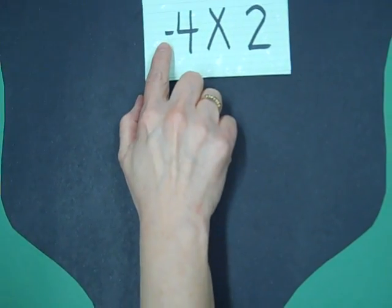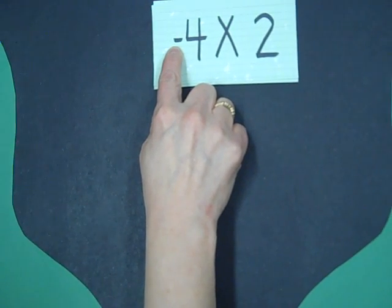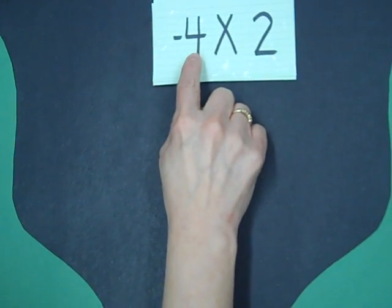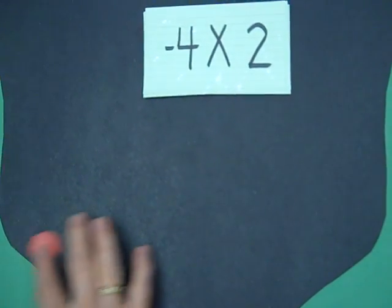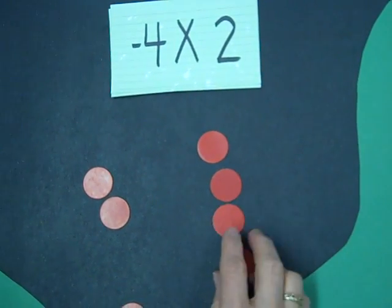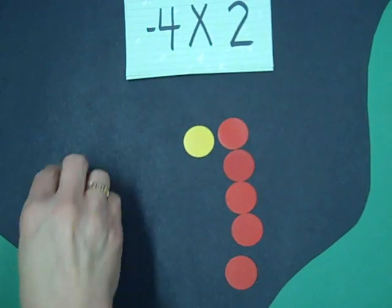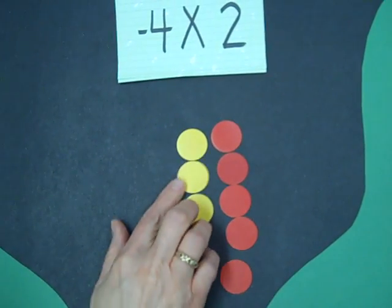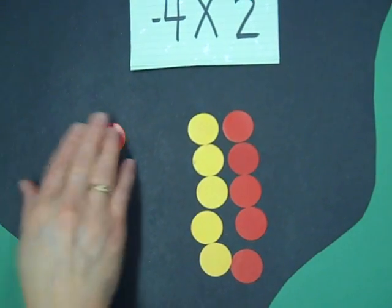Here's a question where I've got a negative number. This negative is going to tell me I'm going to take them out of the pit. I'm going to have four groups, and in each group is going to be two. If I had a whole bunch of zero pairs sitting in here, then I would have something I could take out.